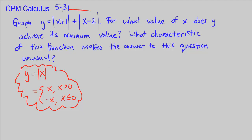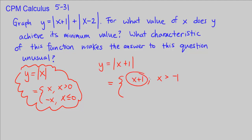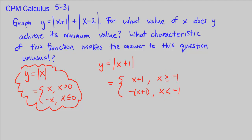So y equals the absolute value of x plus 1, as a piecewise function, is defined to be x plus 1 when x is greater than negative 1, and negative of x plus 1 when x is less than negative 1. One of them has to be 'or equal to' to keep it a continuous function. This is how we break up the function into two pieces, and I'll call that y sub 1.